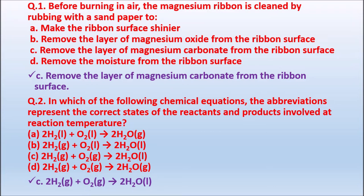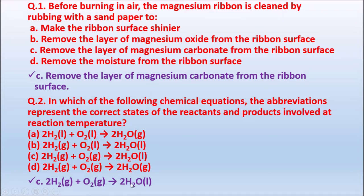Question 2: In which chemical equation does the abbreviation represent the correct state of reactants and products at reaction temperature? Option A: 2H₂(l) + O₂(l) → 2H₂O(g). Option B: 2H₂(g) + O₂(l) → 2H₂O(l). Option C: 2H₂(g) + O₂(g) → 2H₂O(l). Option D: 2H₂(g) + O₂(g) → 2H₂O(g). The correct answer is Option C: 2H₂(g) + O₂(g) → 2H₂O(l).